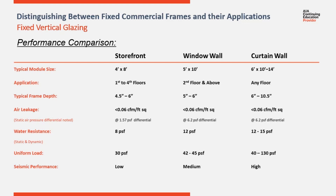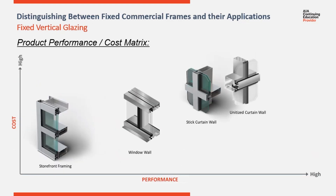For those in seismic areas, comparing storefront, window wall, and curtain wall: window wall performs better in seismic situations than storefront, but not as well as a unitized curtain wall system. If we put together a matrix showing storefront to curtain wall — with performance across the bottom and cost up the left side — storefront is situated at lower cost and lower performance, window wall moves up a little in cost and gains performance, and curtain wall moves up again in both cost and performance.